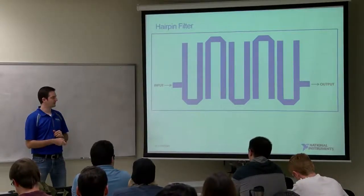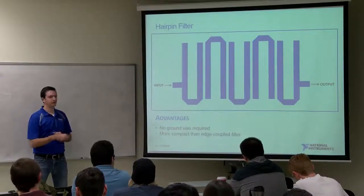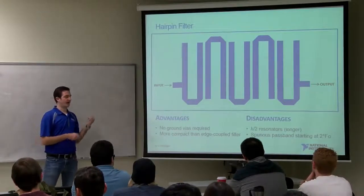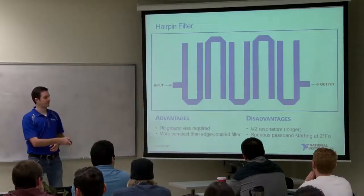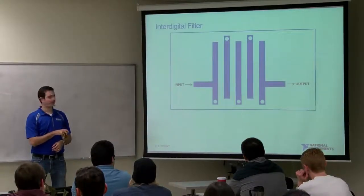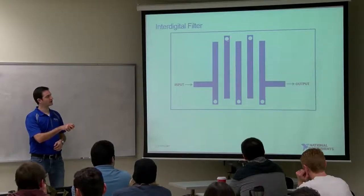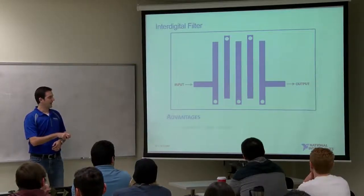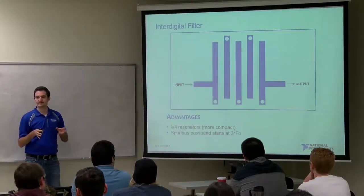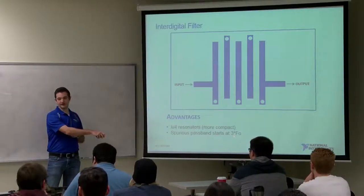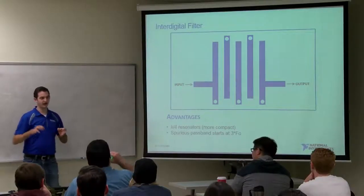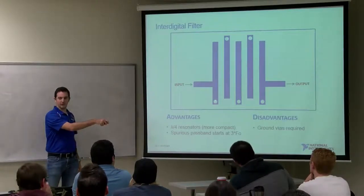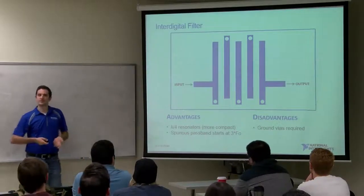The hairpin filter is basically the edge-coupled filter folded around, making it more compact, still without requiring ground vias. However, it shares the same disadvantages — half wavelength and spurious passband at twice the center frequency. The interdigital filter is a different type, a quarter-wavelength filter where one end of the resonator is short-circuited to ground and the other left open. As a result it's more compact, and its spurious passband is pushed out to three times the center frequency rather than twice. The disadvantage is you have to figure out a way to ground those endpoints.